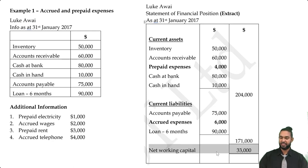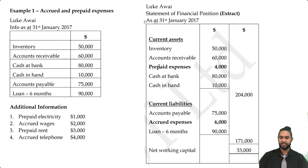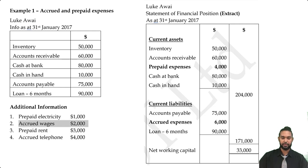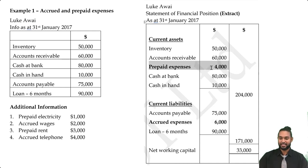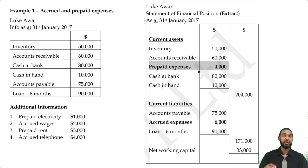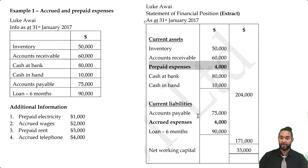You may not always have to show net working capital — the question will tell you. If no format is specified, you're free to use any format. Regarding why there's one line item for prepaid expenses and one for accrued expenses despite having two of each: the convention is to summarize them into one line item regardless of how many there are, so you don't overcrowd your financial statements. Even if you had ten prepaid expenses, you'd collapse them into one line item.